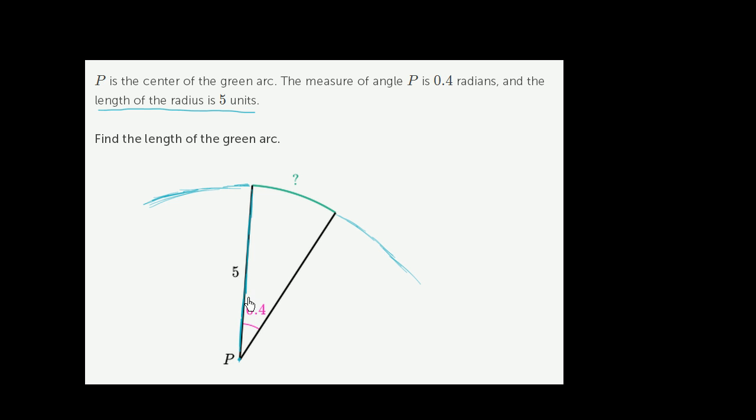Well, all we have to do is remind ourselves what a radian is. One way to think about a radian is, if you look at the arc that the angle intercepts, which is this green arc, and you think about its length, the length of this green arc is going to be 0.4 radii. One way to think about radians is if this angle is 0.4 radians, that means that the arc that it intercepts is going to be 0.4 radii long.